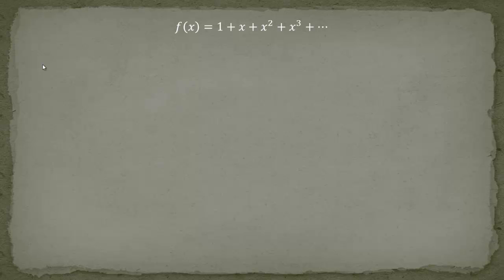Instead of going for the infinite sum right away, I'll take the sum ending at x to the n, so that we have a finite sum. I'll explain later why this is important. We have a finite sum: 1 plus x plus x squared plus x cubed plus and so forth until x to the n. If you have n equals 1000, it would take a lot of time to calculate — even a computer would have trouble with so many summations and multiplications.